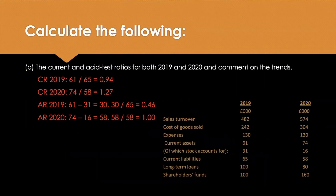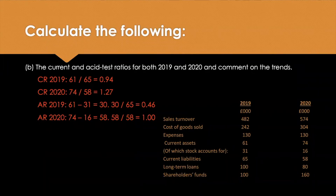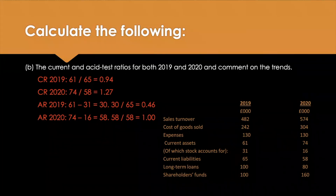The next ratios I want you to know are the current and acid test ratios, which look at liquidity. For the current ratio, we're looking at current assets in 2019 and 2020. In 2019, we've got assets of 61 and 31 of those is stock. We keep the stock in the equation, so you look at the 61 and divide it by the liabilities of 65, giving a ratio of 0.94. In 2020, the assets have gone up and the liabilities have gone down, so the ratio is now 1.27.